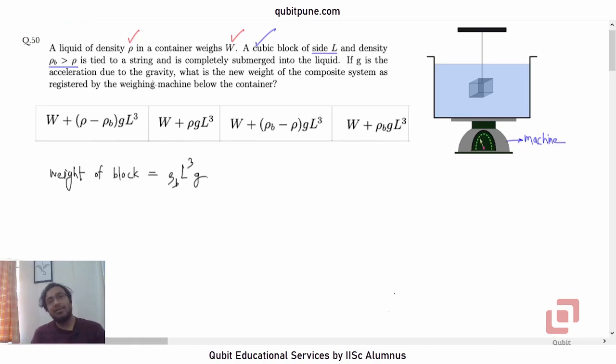Now you know that because it is completely submerged in the liquid, the volume that the block will displace of the liquid will be the same as the volume of the block itself. So what will be the buoyant force? The buoyant force which will be acting vertically upwards, this will be equal to density of the liquid ρ into the volume that it displaces, so L³ into g. This is by Archimedes' principle.